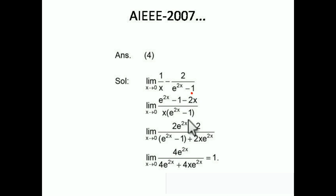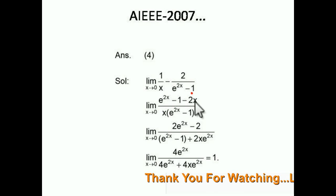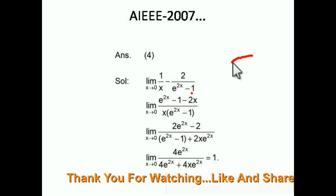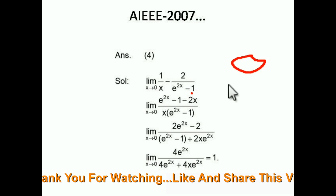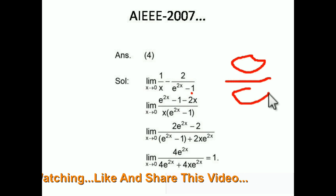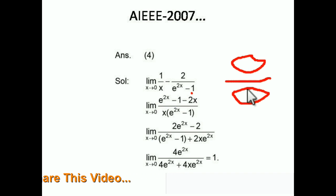Now, if we put x = 0, the numerator becomes 1 - 1 - 0 = 0 and the denominator also becomes 0. So we have the 0/0 indeterminate form. For the 0/0 form, we can apply L'Hôpital's rule, where we differentiate the numerator and denominator respectively.